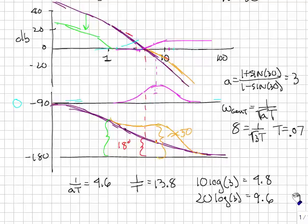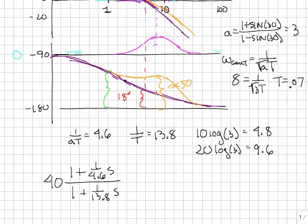So this is how you would do a phase lead controller by hand. Of course, you should probably do this in MATLAB so that you can get better estimates of the actual values. The final thing to do is just write down the value for the controller, and it's this. 40 is the gain that I need that I calculated from the required steady state error for a ramp. And here's the location of the zero and the pole that I calculated previously.